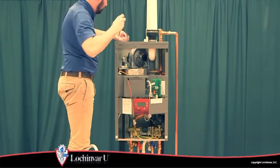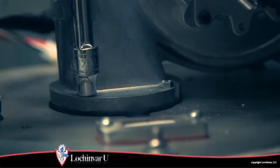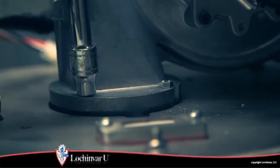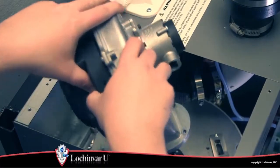Then, using a 5/16 inch wrench or socket, remove the four screws that secure the fan assembly to the heat exchanger top plate. Now remove the fan assembly and Venturi from the unit.